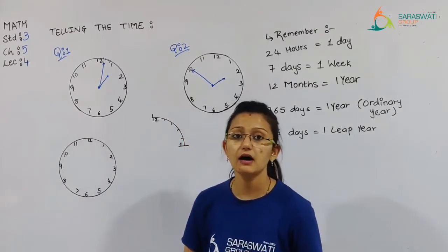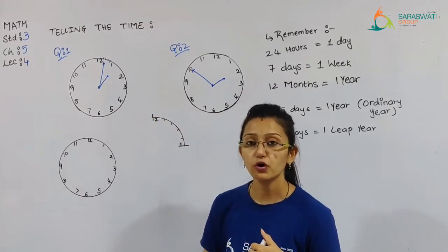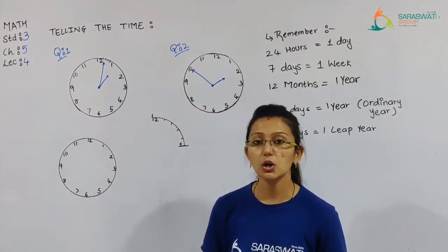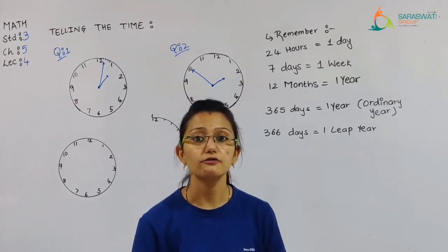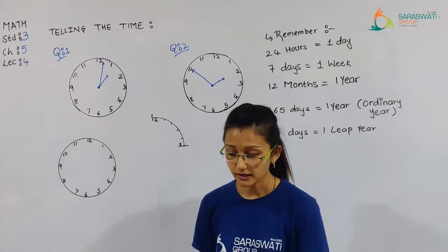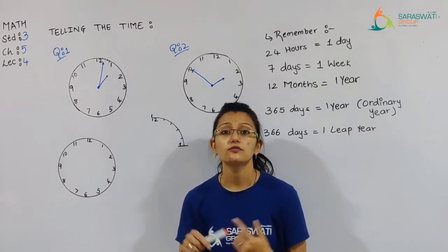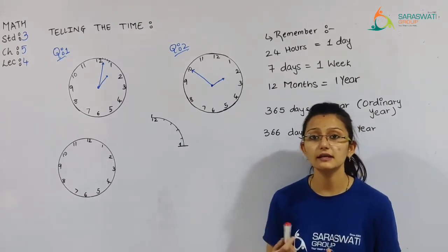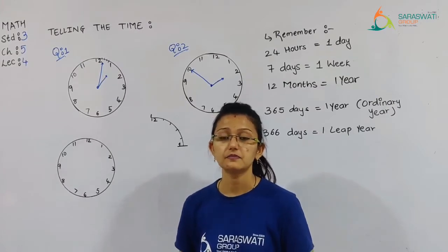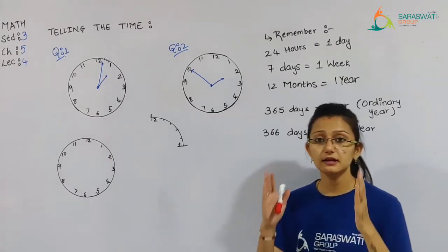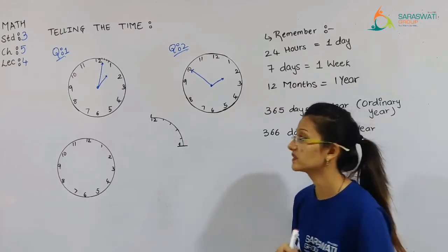And in lecture number 4, now we are going to solve exercise number 5.3. In this exercise, first of all, we need to learn about telling the time by 1 minute — how 1 minute is counted and calculated. That is what we are going to learn.